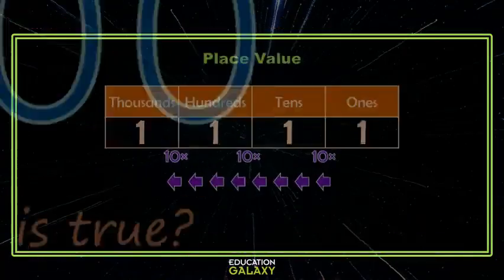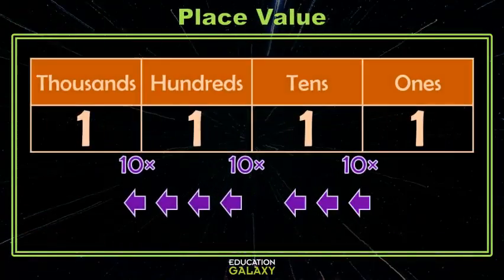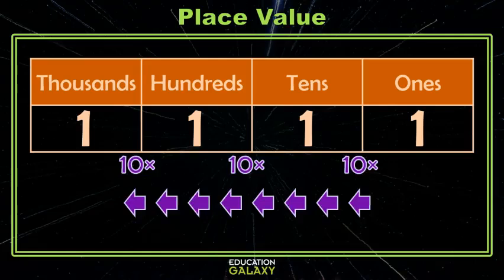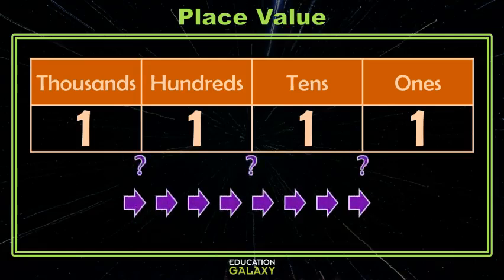So, in summary, again, as I move to the left on the place value chart, each place value position is 10 times the position to the right. So, what happens as we move to the right on the place value chart? Let's investigate.